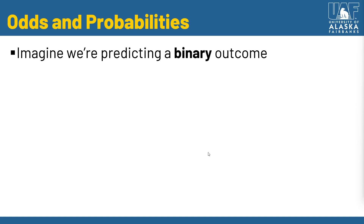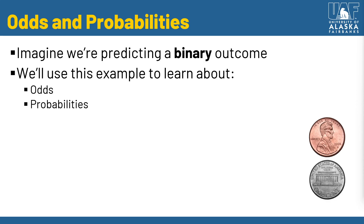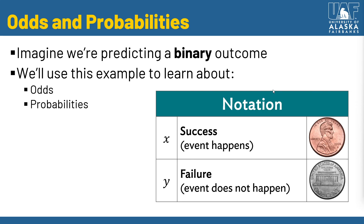I'd like us to imagine that we're predicting a binary outcome. If you're not familiar with the term binary or dichotomous, you can think of it as a scenario in which there are only two possible outcomes — like a coin flip. We can flip heads or tails, and that's essentially it. We'll use a notation of x and y. Binary outcomes can be thought of as success and failure, or presence or absence — but let's just say x is heads and y is tails.